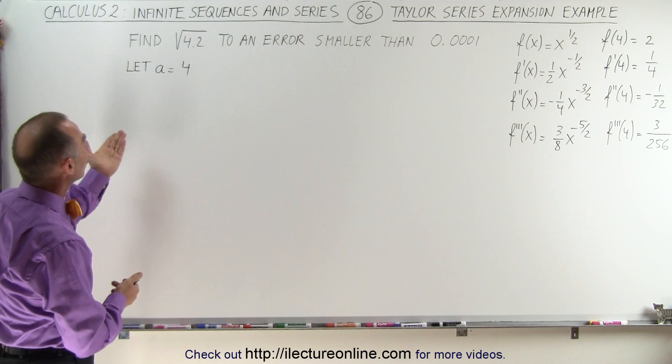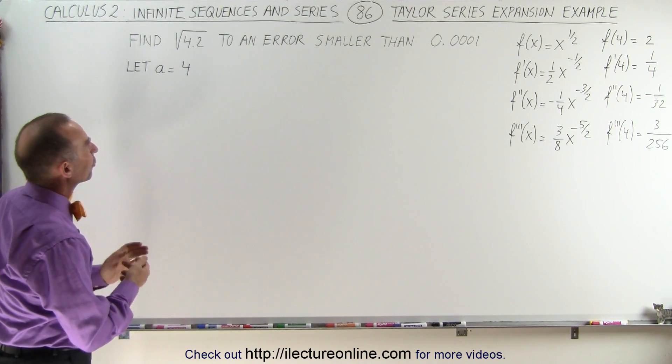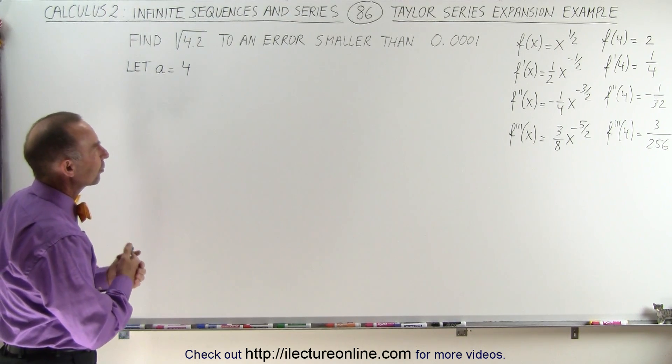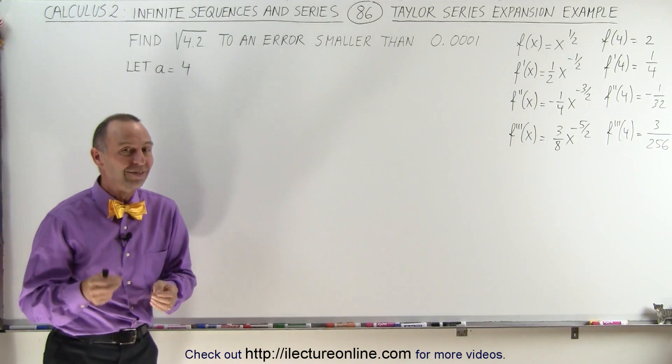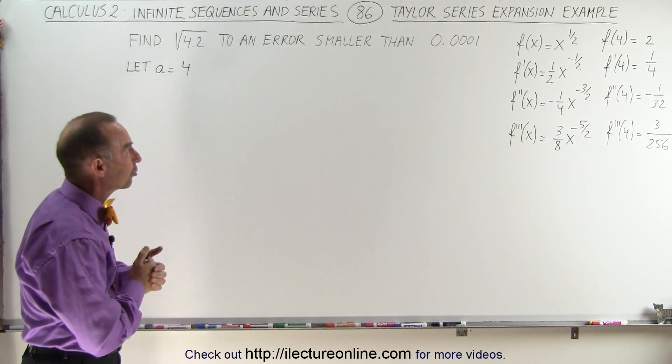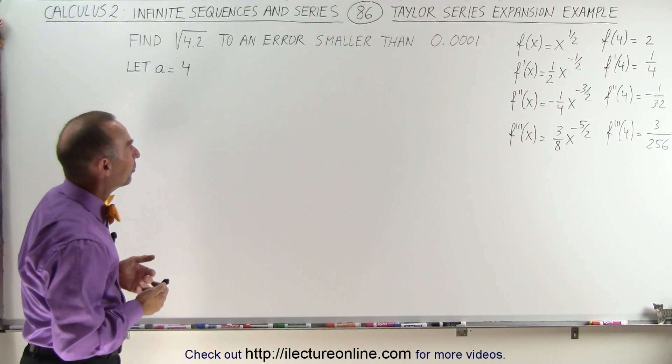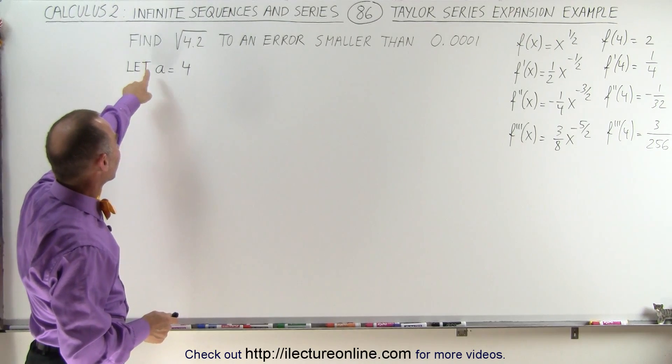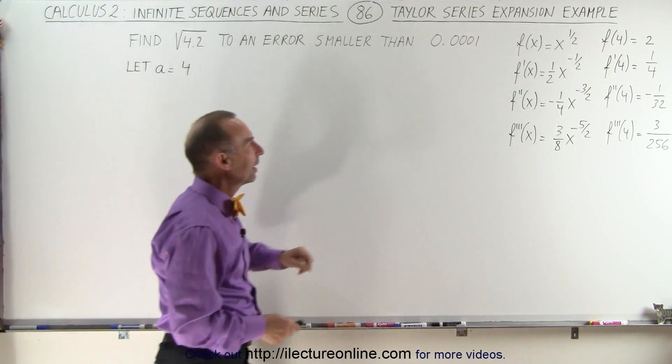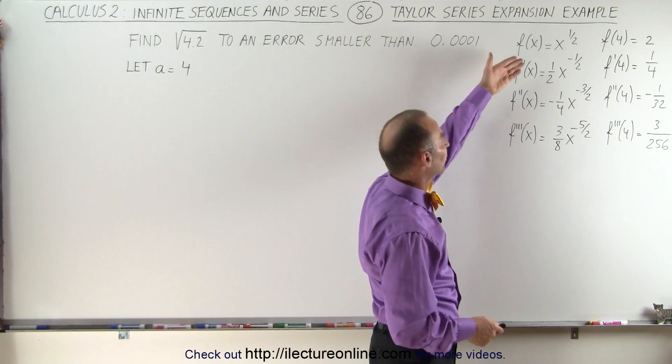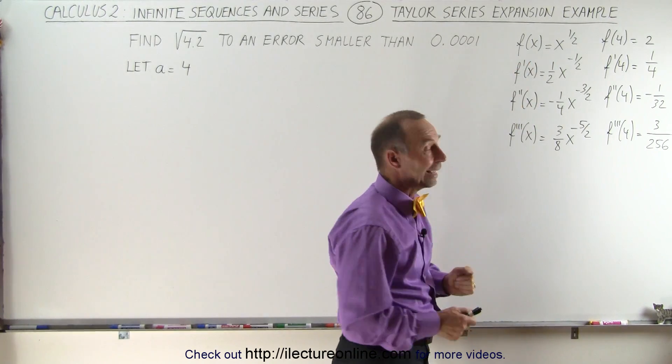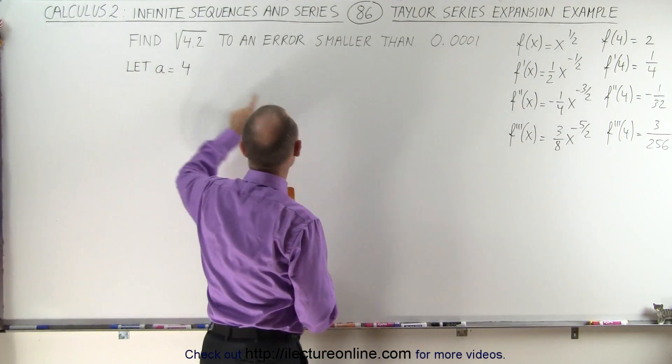We're trying to find the square root of 4.2 to an error smaller than 0.0001 using the Taylor series expansion. To help us out, we're going to use the function f of x equals the square root of x, and the first, second, and third derivative already laid out for us, and then we're going to use a equals 4.